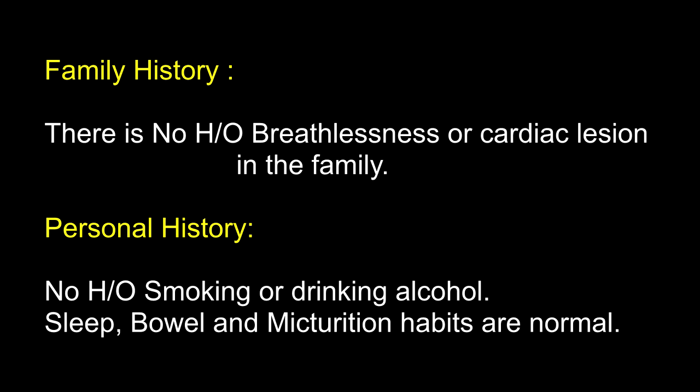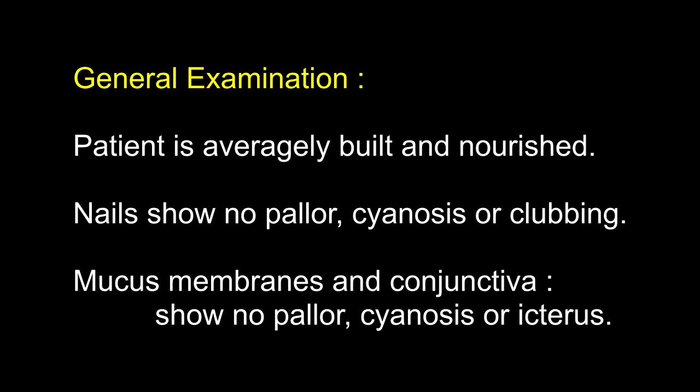Analysis of history: rheumatic fever as the probable etiological factor; grade 3 exertional dyspnea suggesting left heart failure; repeated attacks of cough suggesting pulmonary congestion; palpitations suggesting left ventricular hypertrophy or atrial extrasystoles or anxiety. The overall picture is of a rheumatic valve lesion with left heart failure but no evidence of congestive cardiac failure. Attention will be focused mainly on mitral and aortic stenosis or regurgitation, with possibility of congenital heart disease kept in mind. On general examination, the patient is averagely built and nourished.